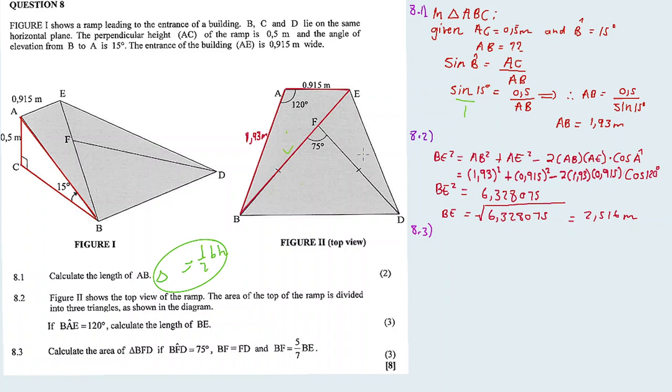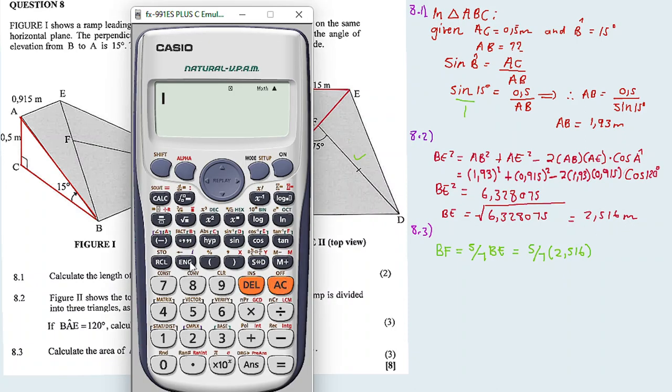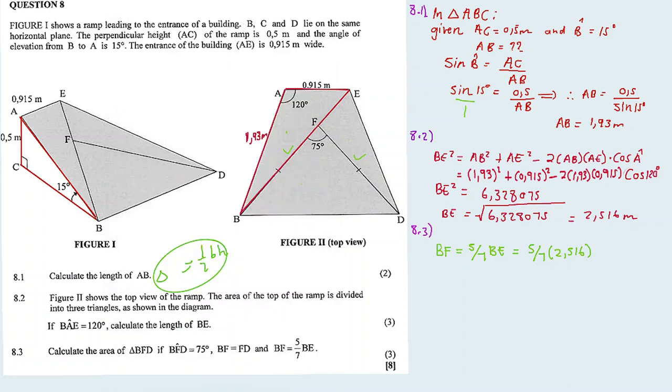I need the length of BF as well as the length of FD. But BF equals 5 over 7 times BE. I just calculated BE earlier. I substitute: 5 over 7 times 2.516 equals, in three decimal places, 1.797 meters.